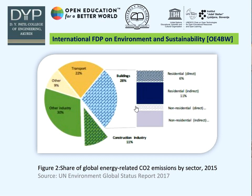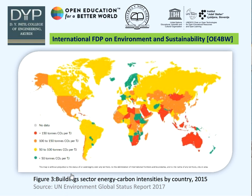The building and construction sector accounts for more than 35% of global final energy use and nearly 40% of energy-related CO2 emissions — a great matter of concern. A map demonstrates building sector energy and carbon intensities country-wise for 2015. Our country falls in the red zone, with greater than 150 tons CO2 per terajoule, where 1 ton CO2 per terajoule is equivalent to 3.6 grams CO2 per kWh. This illustrates the huge impact of the building sector on the environment.